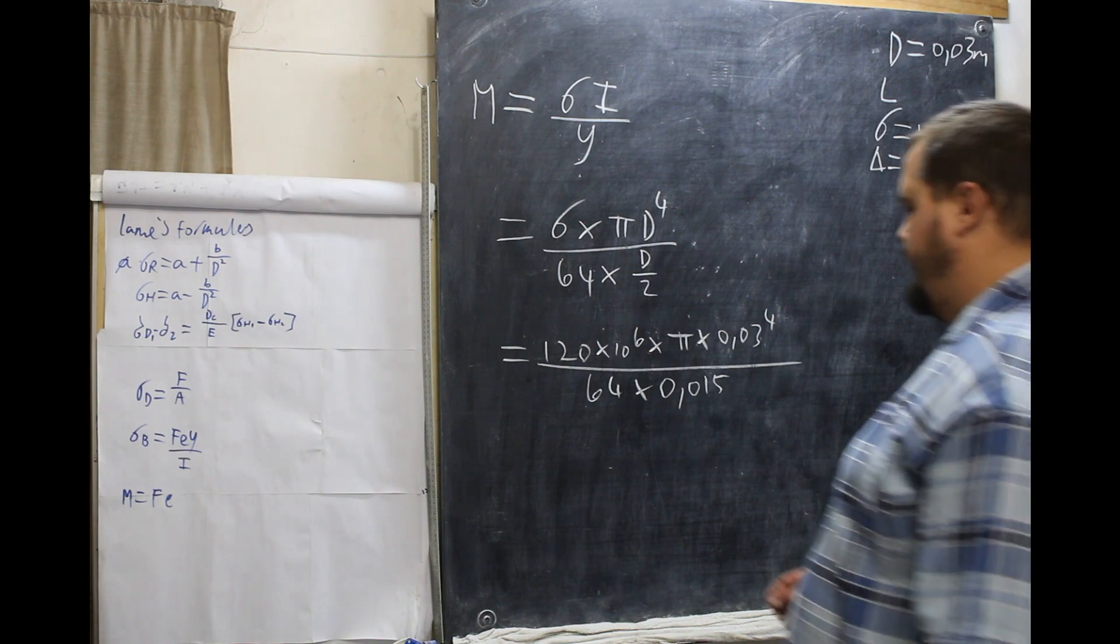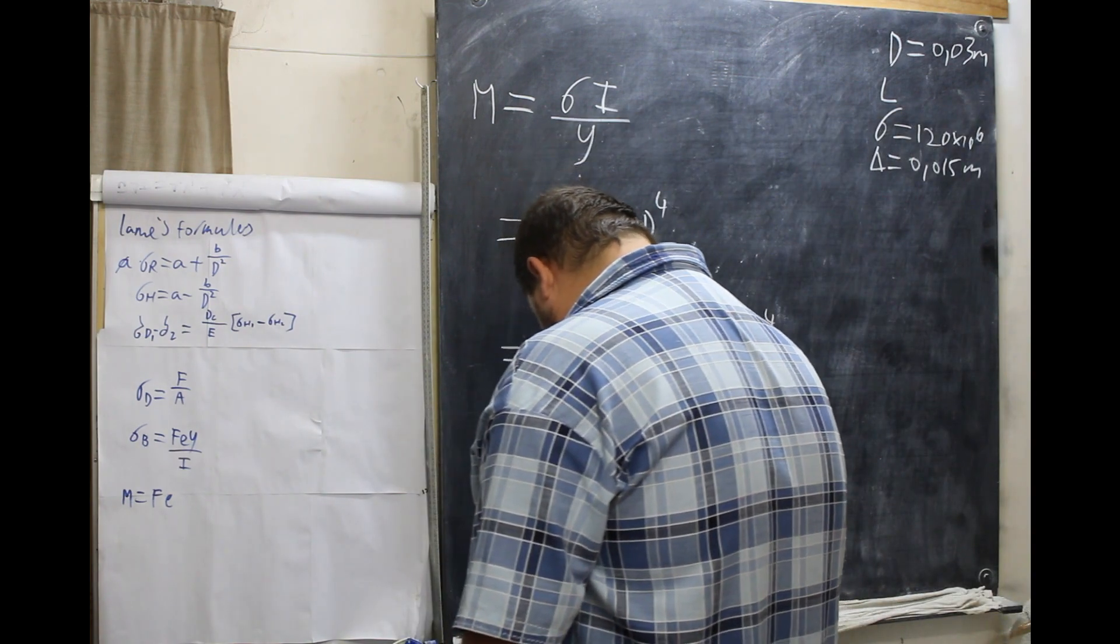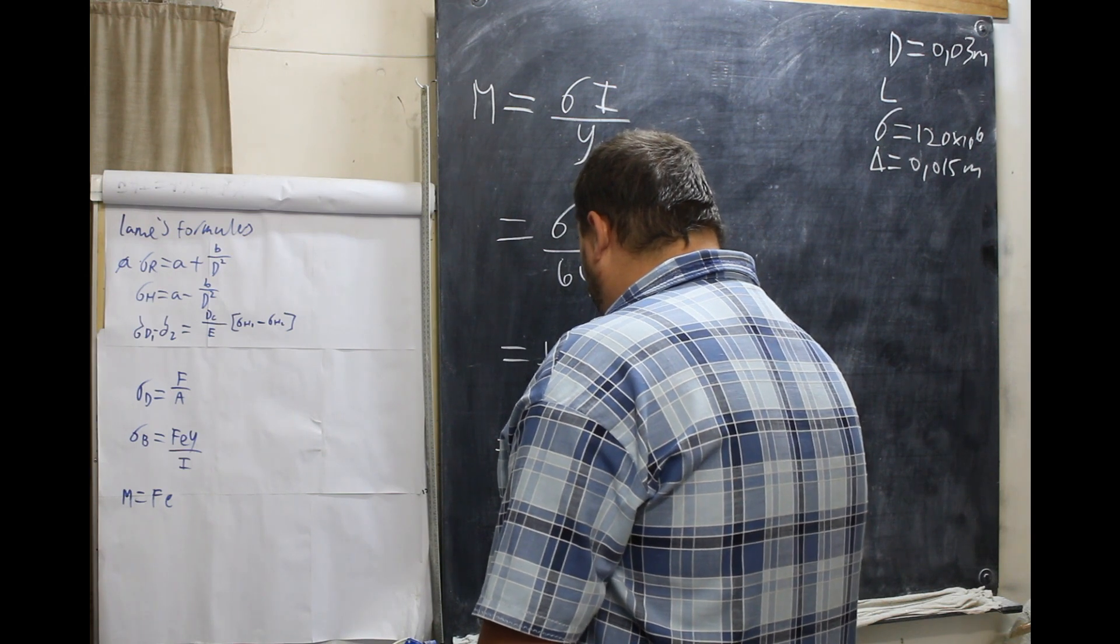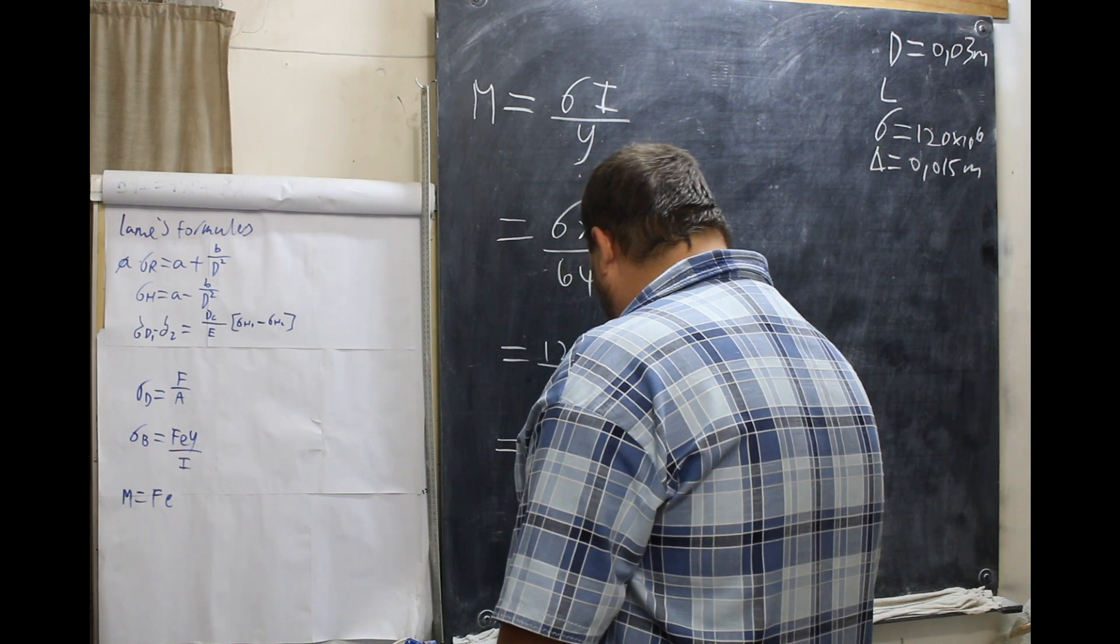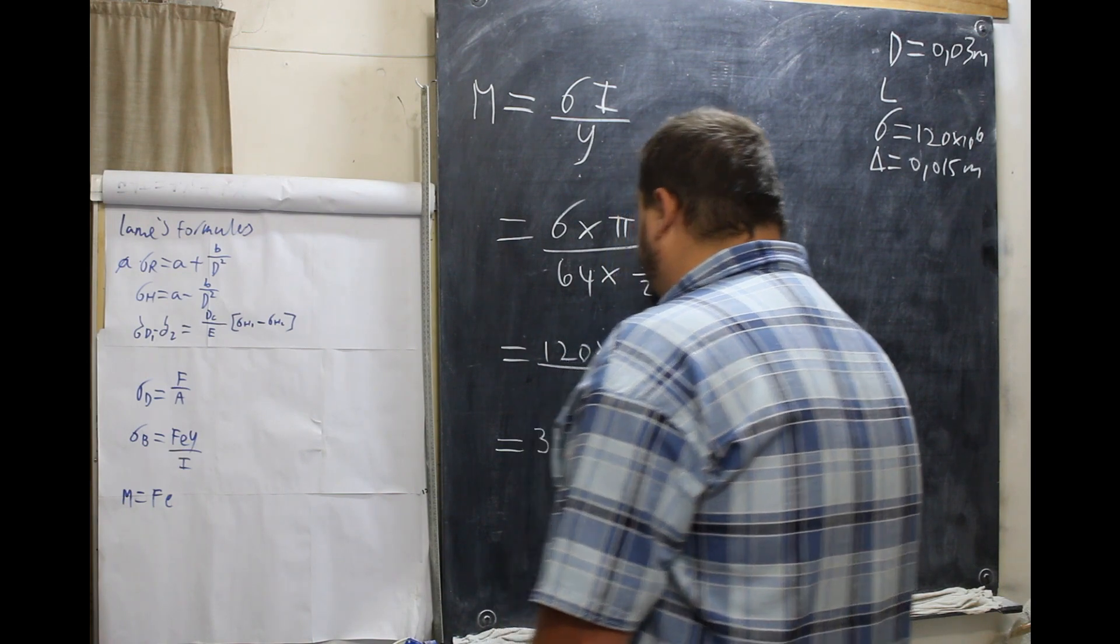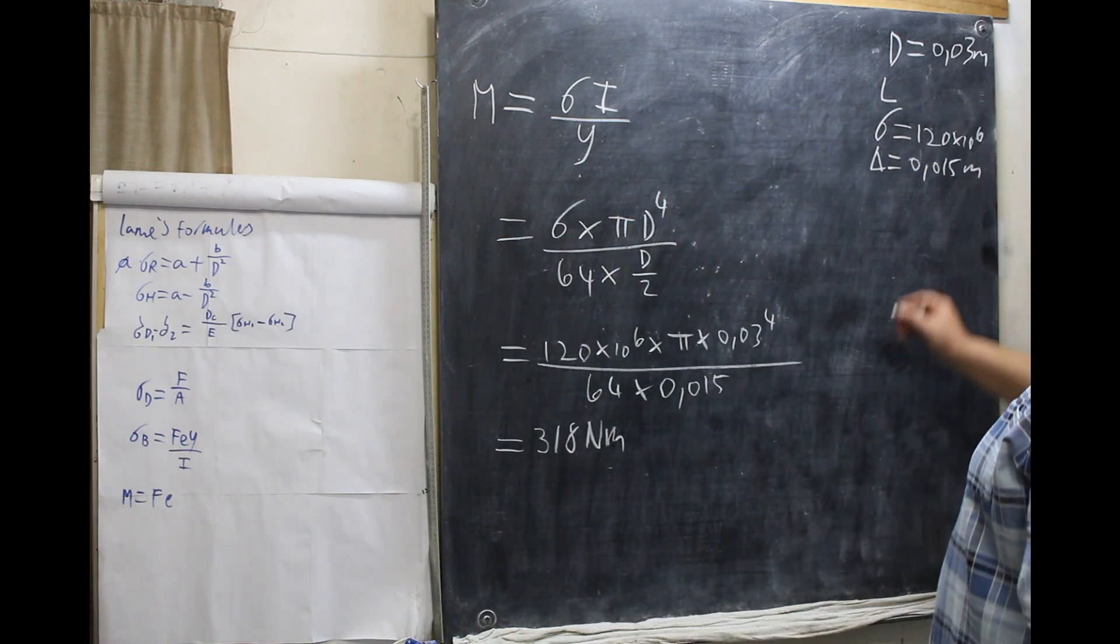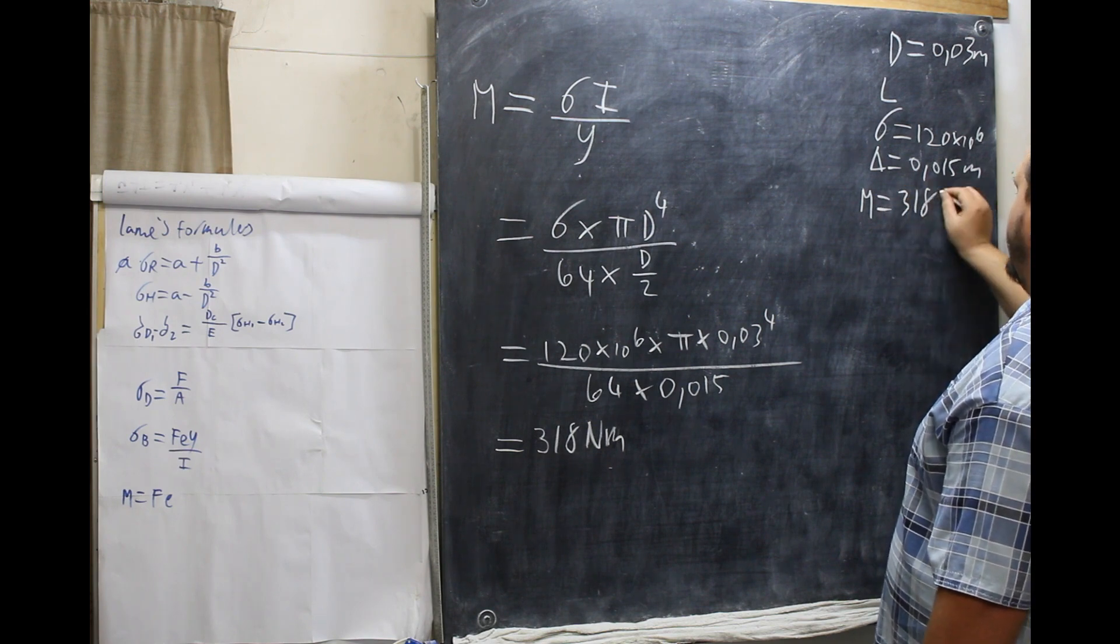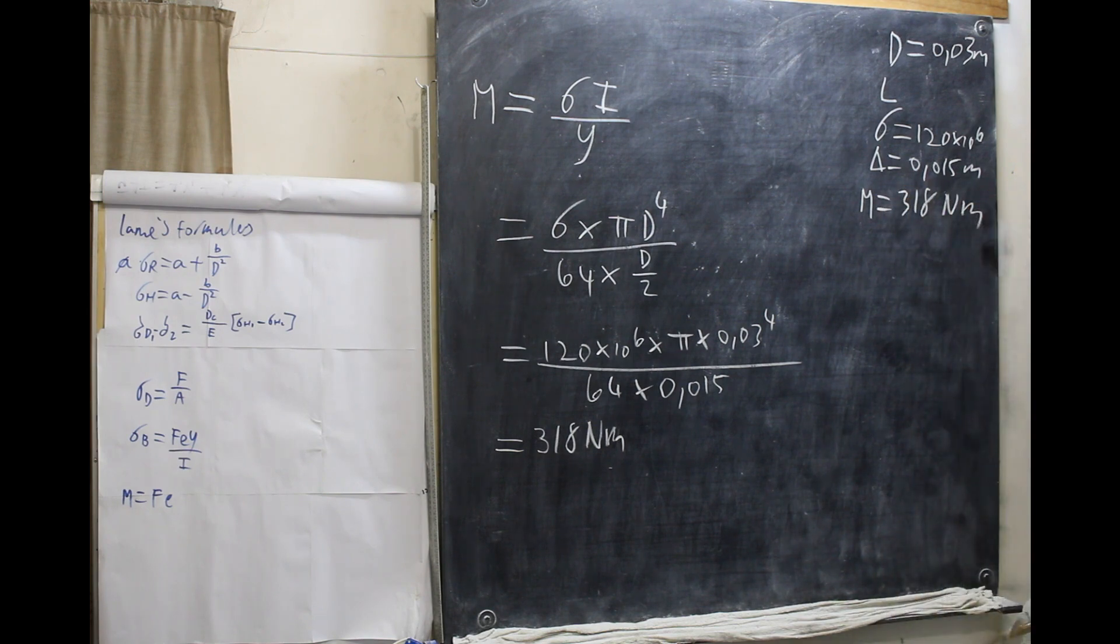And our answer that we get, we take it to the nearest whole number, 318 Newton meters. So, M equals 318 Newton meters. That will be important later.